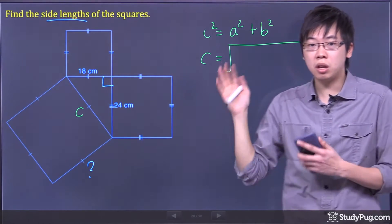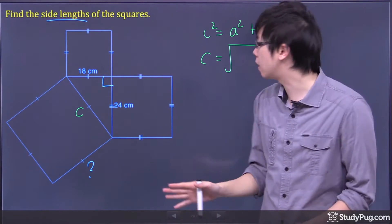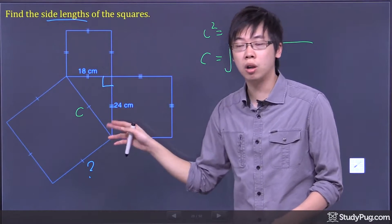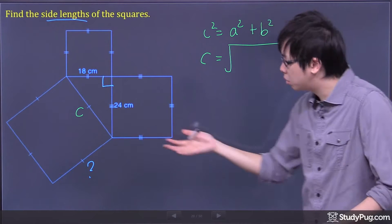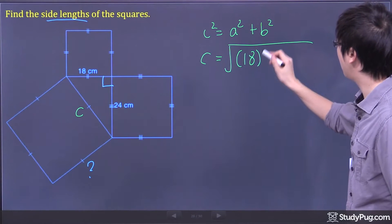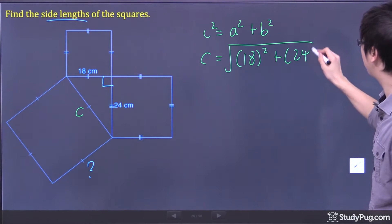So for a and b, it's your choice. You can choose whatever you like. You get the 18 and 24. So the a and b are just the two legs of that right triangle. So you can plug in 18 for the a and 24 for the b.